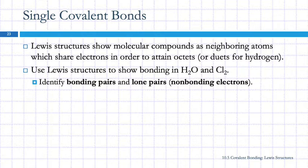Let's use Lewis structures to show the bonding in water and chlorine. So H2O, we've got two hydrogens and an oxygen. There's a hydrogen, I'm going to put the oxygen in the middle, here's another hydrogen.